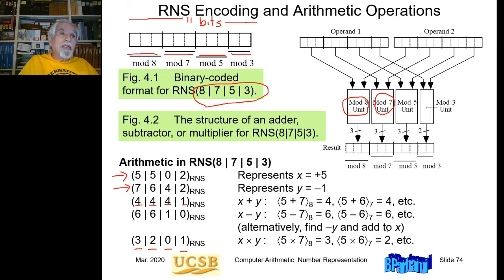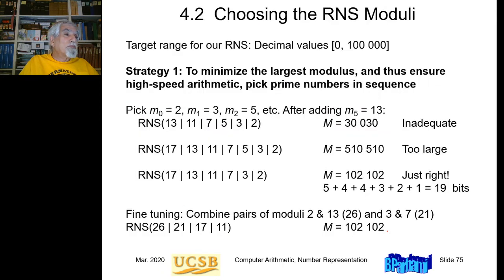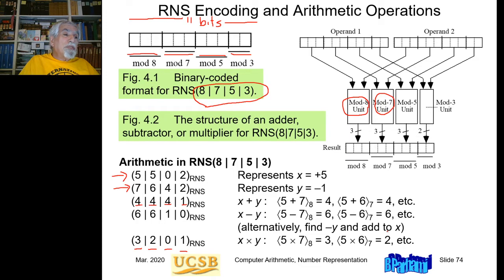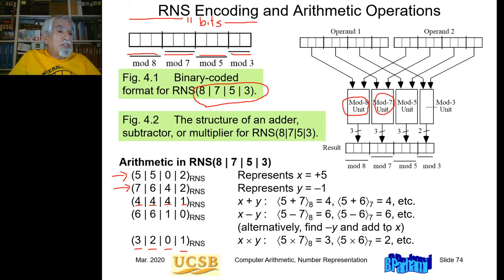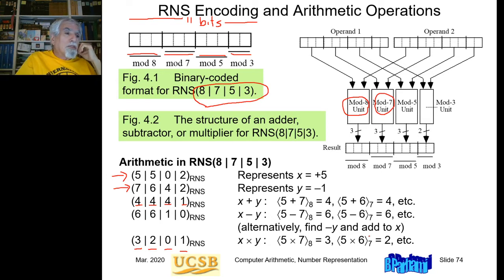Unfortunately, division and some other operations are quite difficult. That's why the application of RNS has remained confined to some special applications where you do a whole bunch of additions, multiplications, add, subtract, multiply — but either no division or very few divisions, because division is extremely slow. If you do very few divisions, maybe it doesn't hurt performance that much. But preferably no division at all.